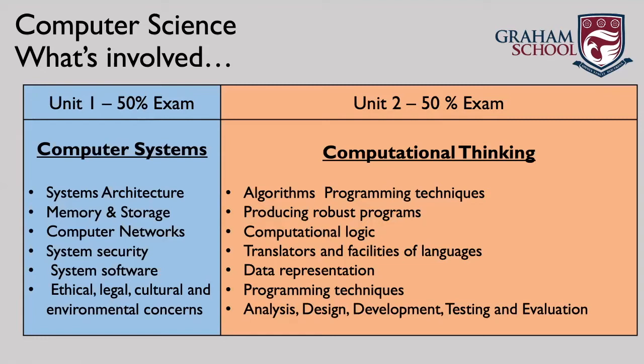Computer Science is split into two separate units, each worth 50%. In Unit 1, we look at Computer Systems — how computers are made up and how computer systems work. We cover the architecture of different systems, memory and storage, computer networks, system software and security, how to prevent cyber attacks, and the ethical, legal, cultural and environmental concerns surrounding computing.